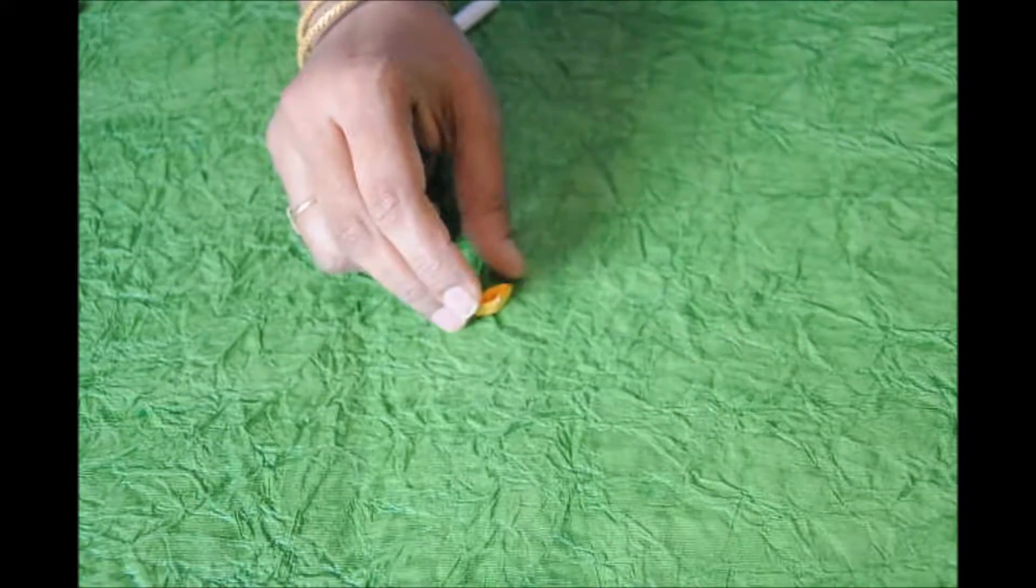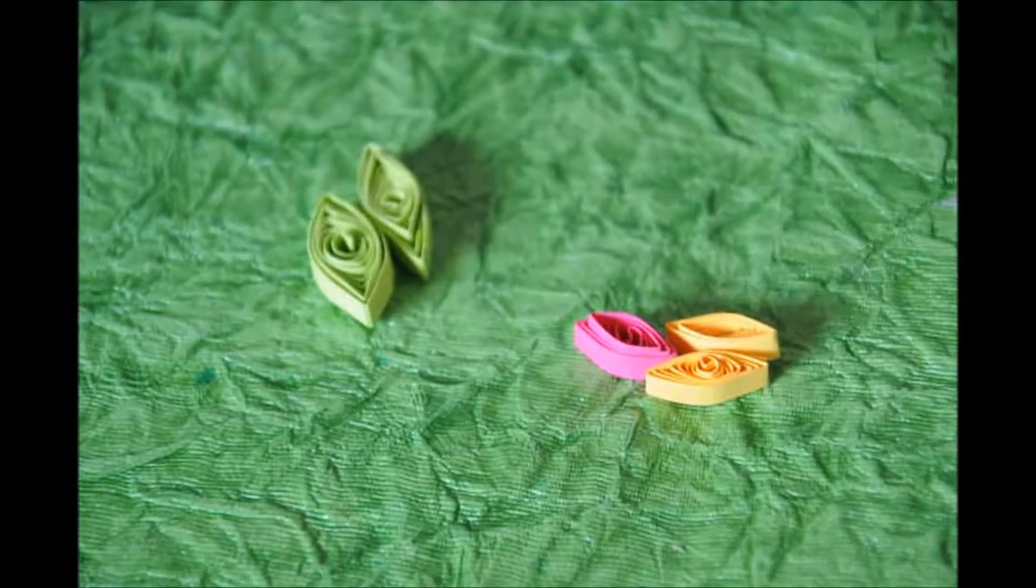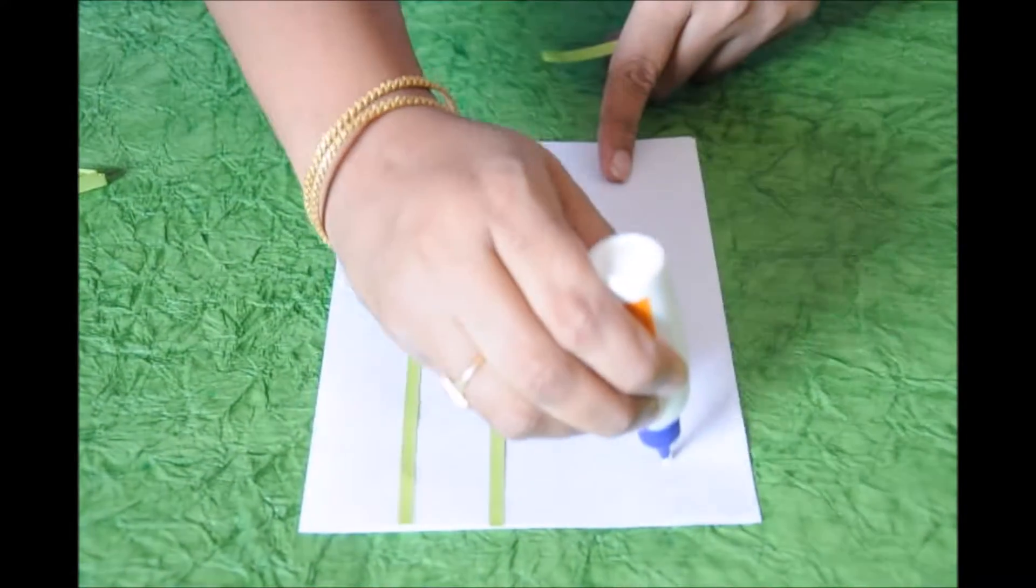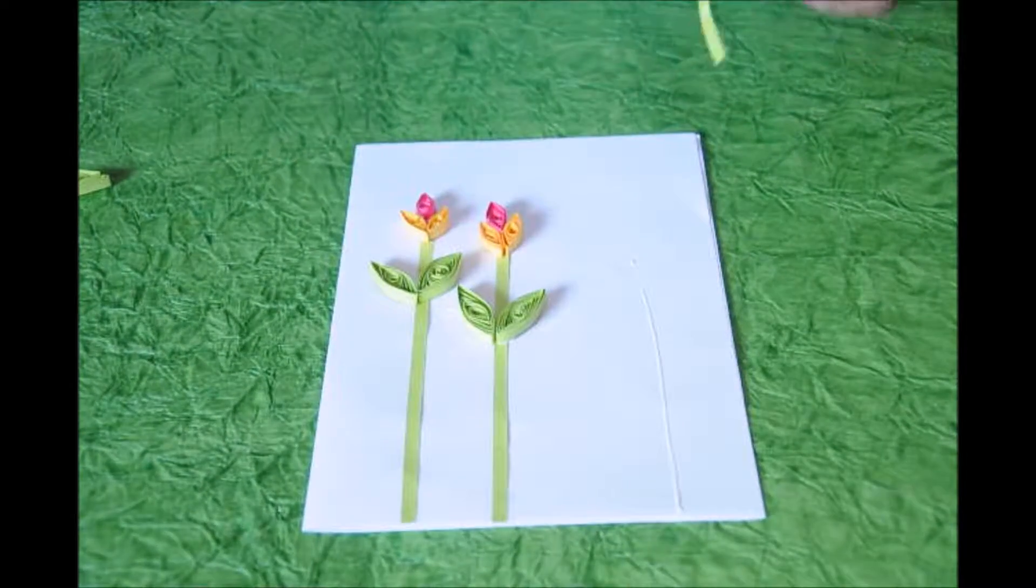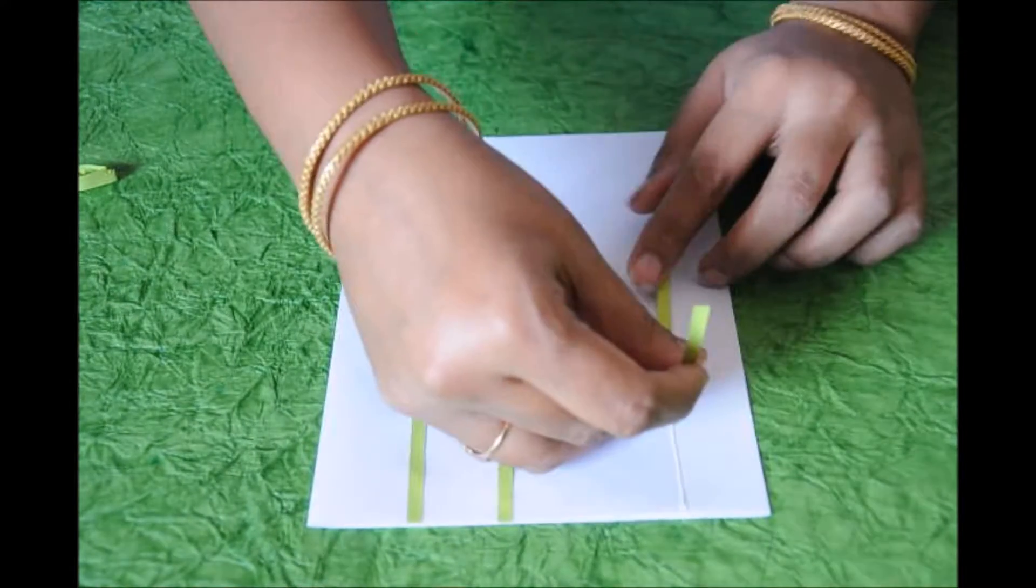I'm just folding it on both sides and making it into a leaf shape. In the similar way, I have made one pink color, two yellow ones, and one leaf. Now I'm taking the green color quilling strip and pasting it on the card.